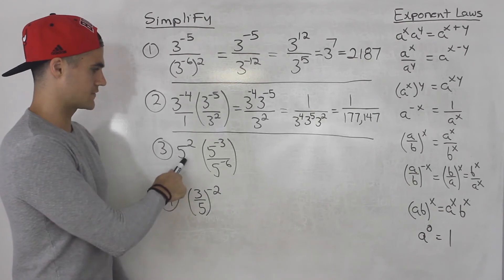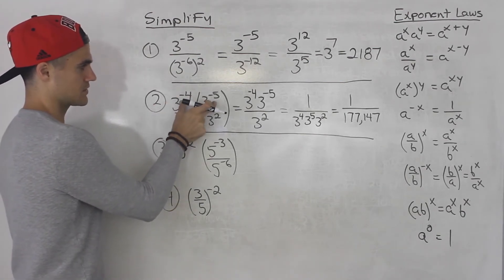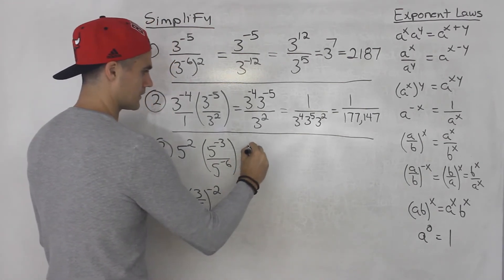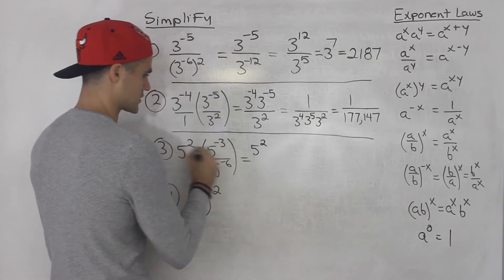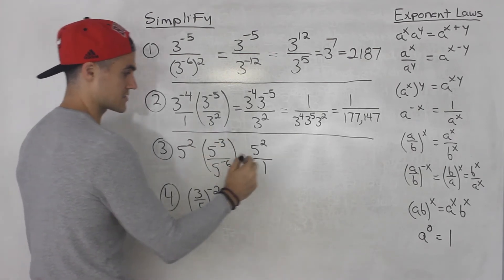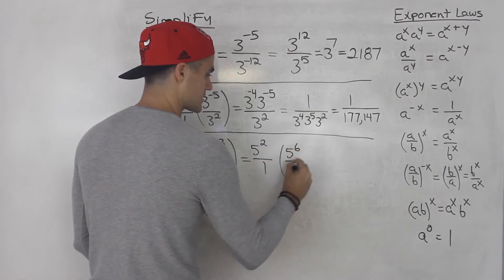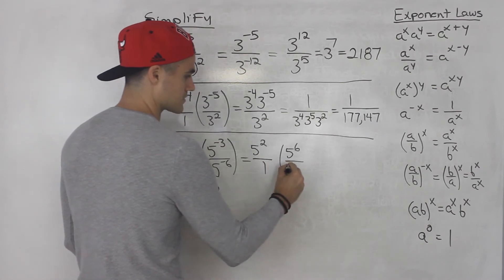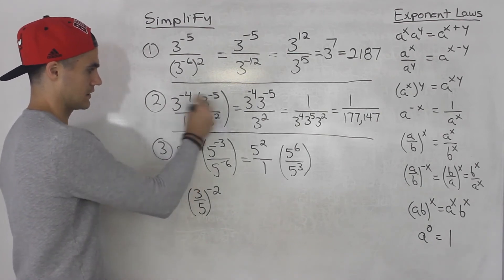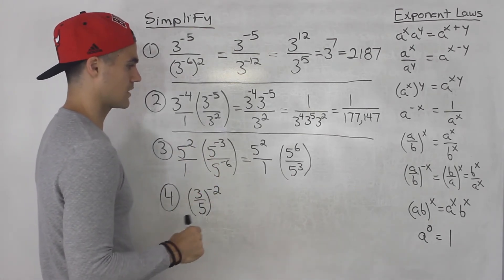For number 3, we have 5 squared times 5 to the negative 3, all over 5 to the negative 6. I'll approach it a bit differently here. Writing 5 squared over 1, the negative 6 in the denominator comes up as 5 to the positive 6, and the negative 3 comes down as 5 to the positive 3. We could also multiply as before — 5 squared times 5 to the negative 3 and add exponents. Multiple ways to do it.